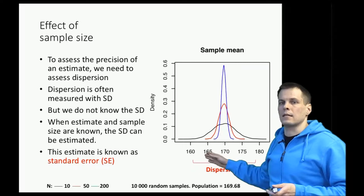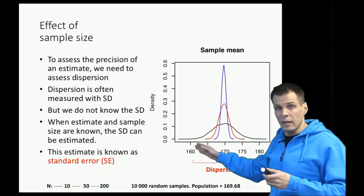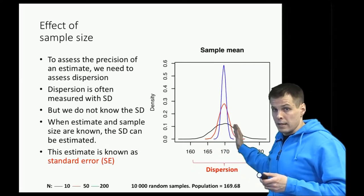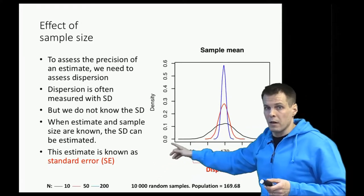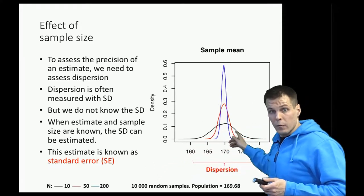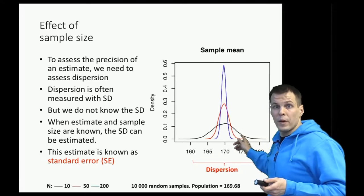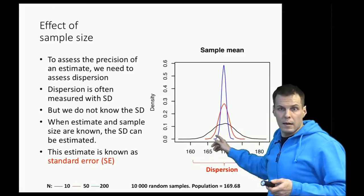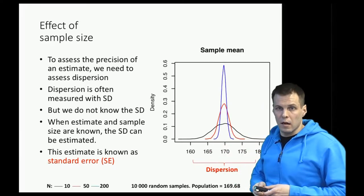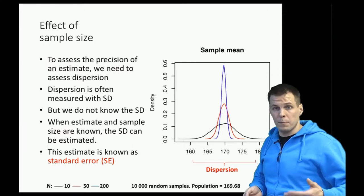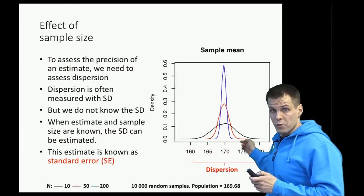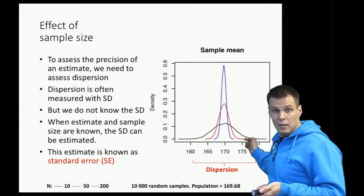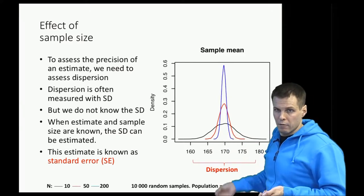Just as the sample mean is an estimate of the population mean, the standard error is an estimate of the standard deviation of the sample mean over repeated samples. How the standard error is calculated isn't relevant at this point — you just need to understand that it quantifies the dispersion of the same study if it were repeated over independent random samples.